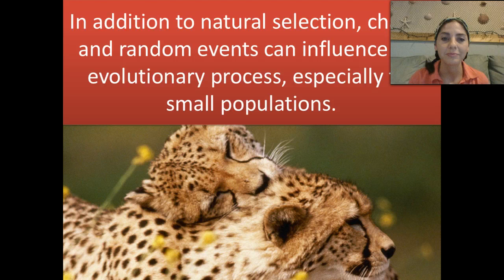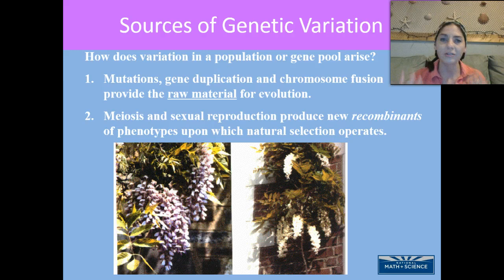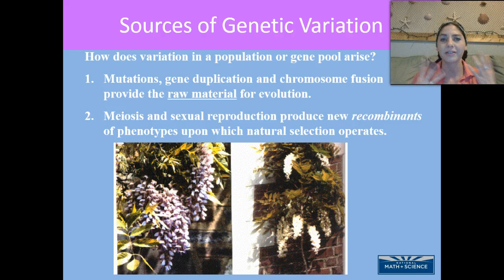There are different sources of genetic variation. We have mutations, gene duplication, and chromosome fusion — those provide the raw material for evolution. And then meiosis, or sexual reproduction, produces new recombinants of phenotypes upon which natural selection operates. Sexual reproduction allows us to have variation within a species. That's why we have different colors of hair, skin, and eyes as humans, and different colors of flowers within a plant species. All of those are phenotypes, or what things look like.